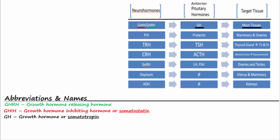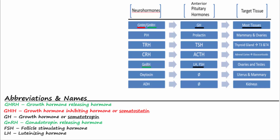Gonadotropin releasing hormone, or GnRH, is another hormone released from the hypothalamus that acts on the anterior pituitary to cause release of follicle stimulating hormone, or FSH, and luteinizing hormone, or LH, into the blood. FSH and LH act on the ovaries and testes to increase sex hormone production and to influence sperm production and follicle development.